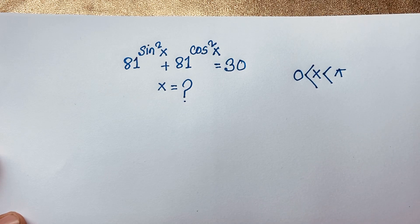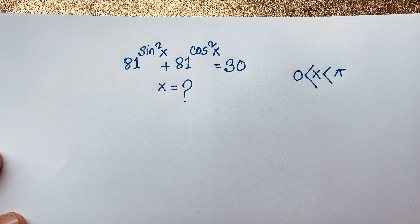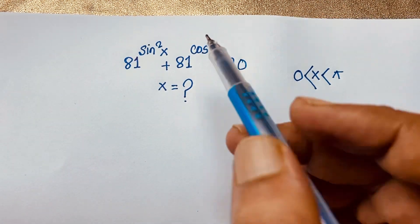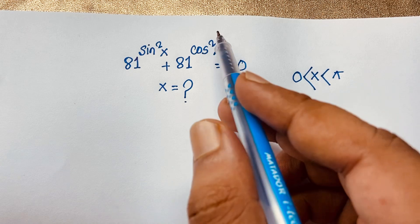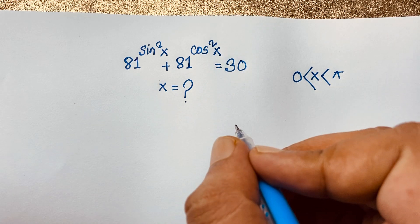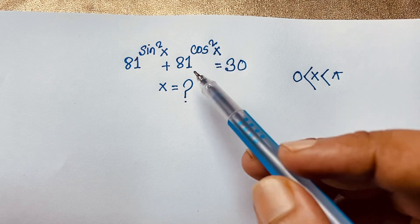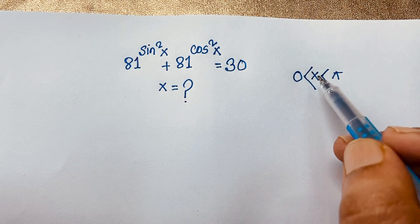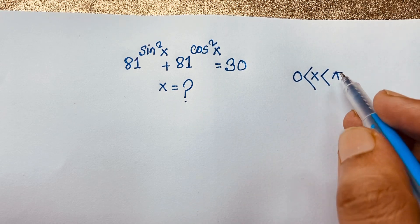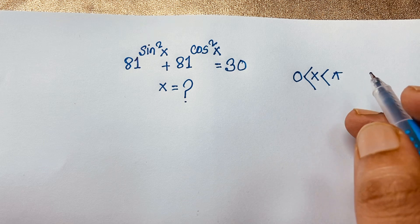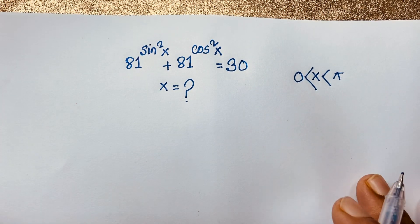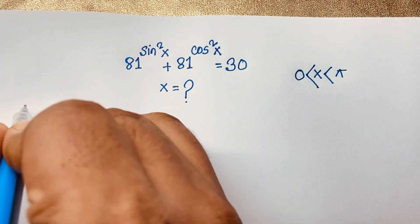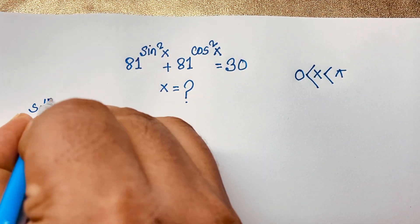Hello everyone, welcome to my YouTube channel. Today we have solved a nice Math Olympiad question. The question is: 81 to the power sine²x plus 81 to the power cos²x is equal to 30, where x is greater than 0 and less than 180 degrees. Now let's see how to solve this interesting exponential trigonometric Math Olympiad question.